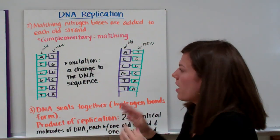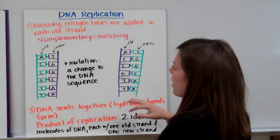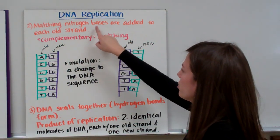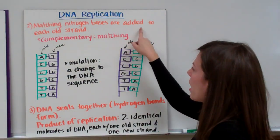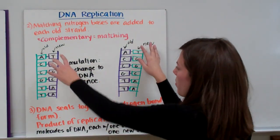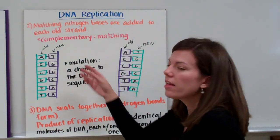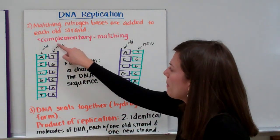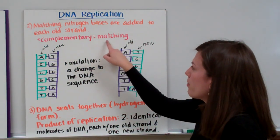After we've unzipped our DNA, we have our two old strands on the side, and then we bring in our new nitrogen bases, or our matching nitrogen bases are added to each old strand. So we start with the green strands, and then we have to add in the letters that match. It's important to know this word complementary. It's just a synonym for matching.